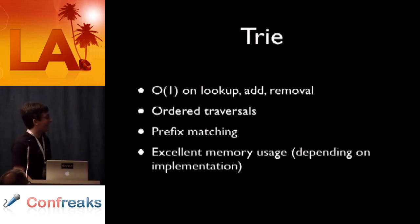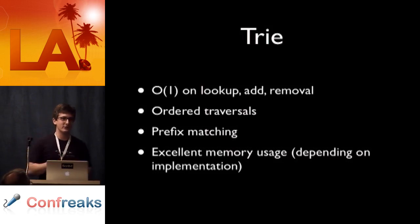So last data structure we're going to look at is a trie. This is actually my favorite data structure. So I think that's pretty cool. So why is a trie cool? Well, it turns out that it has order one lookup, it has order one add, it has order one removal. You can do ordered traversals, you can do prefix matching. Basically, it's like a hash table except better in every way. That's not actually true, but anyway. And then depending on the implementation of it, you can have really good memory usage. So that's also awesome.